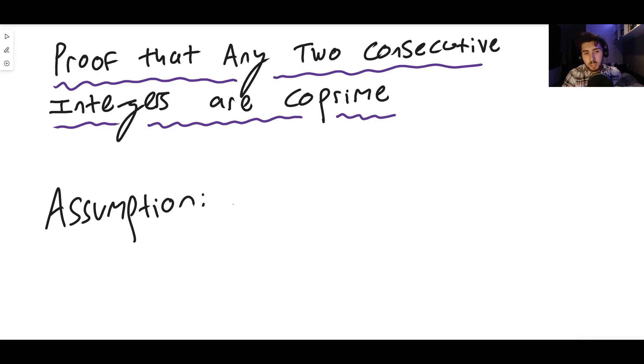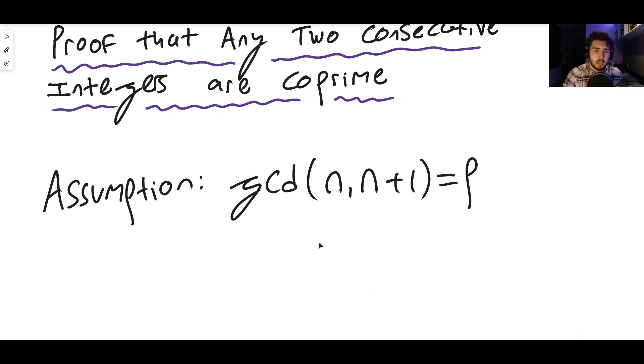So the assumption is that there does exist some value such that the greatest common divisor of let's say two integers n and n+1, they're clearly consecutive, is some number p and p is a whole number. And the greatest common divisor, if you haven't seen this kind of notation before, it just means the biggest number that n and n+1 are divisible by.